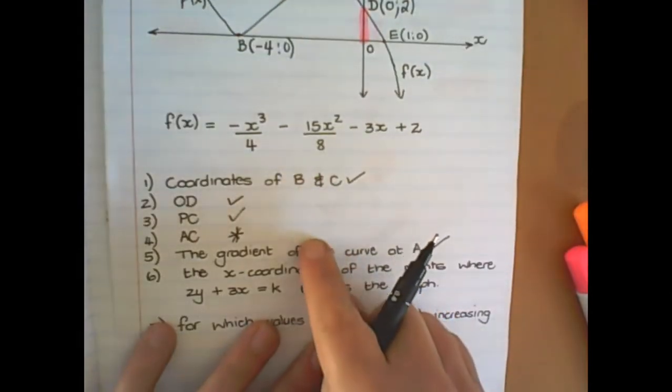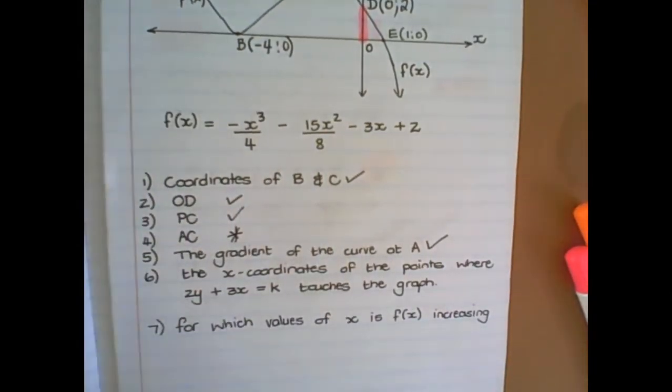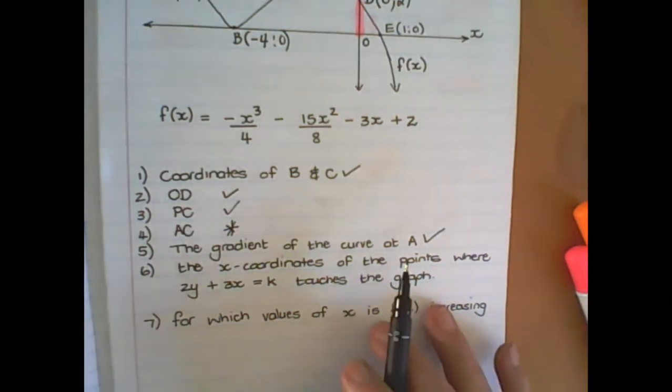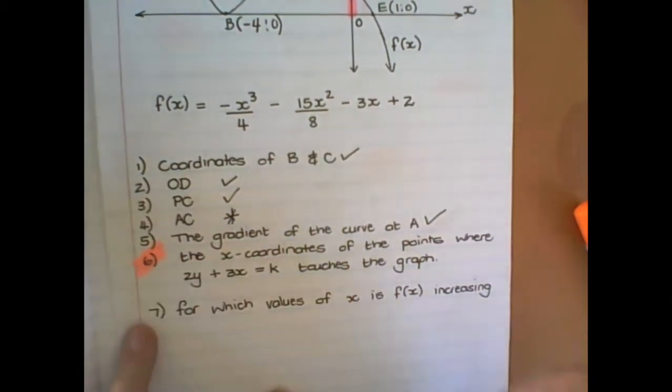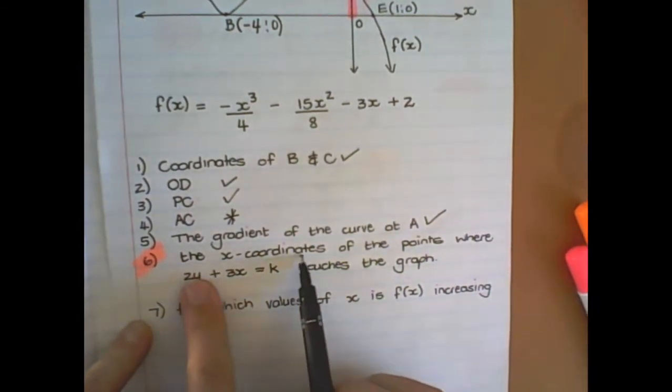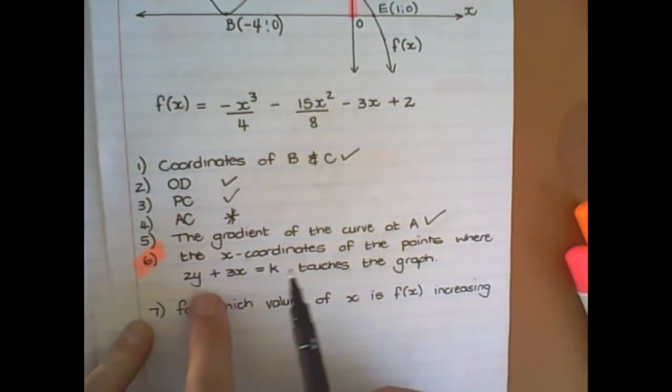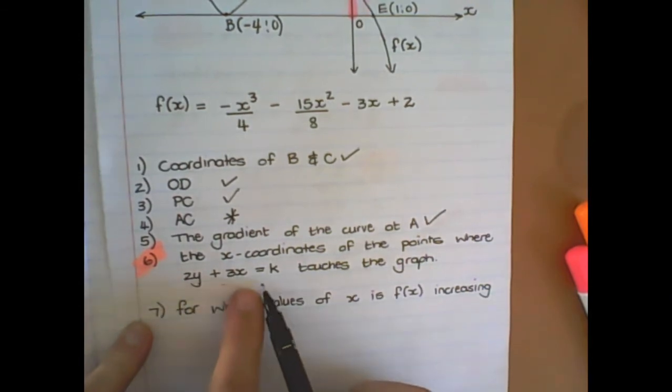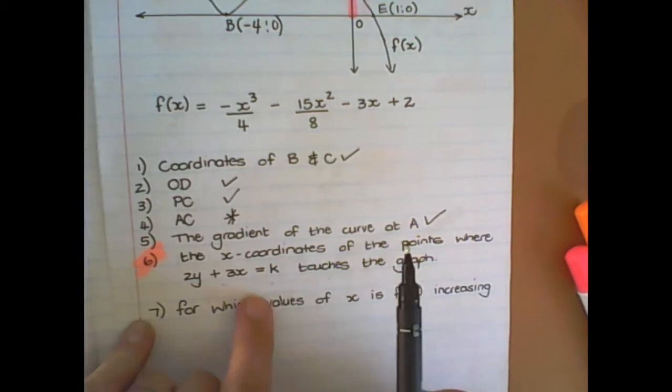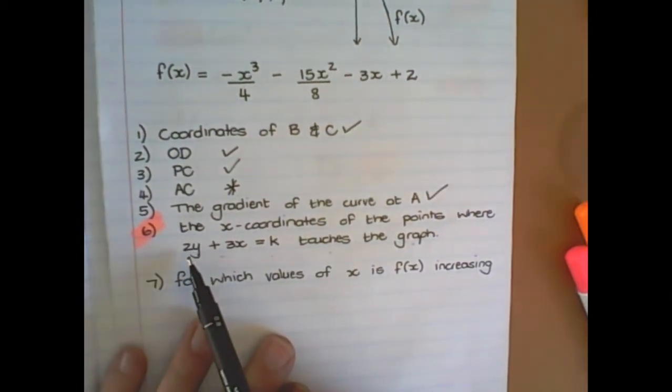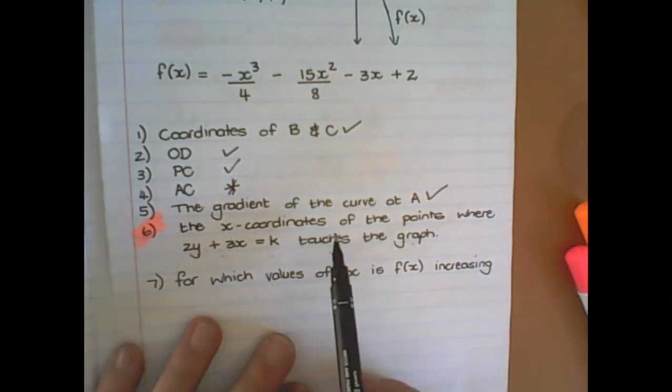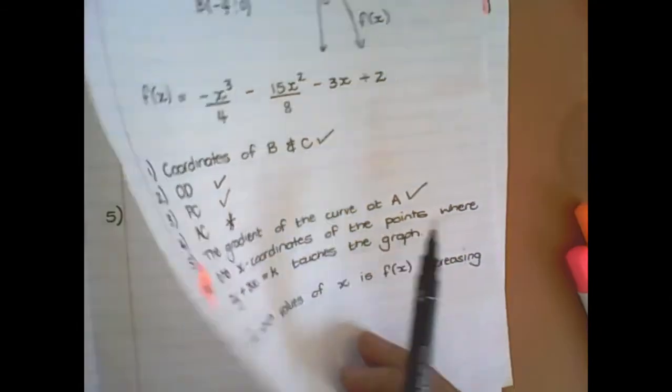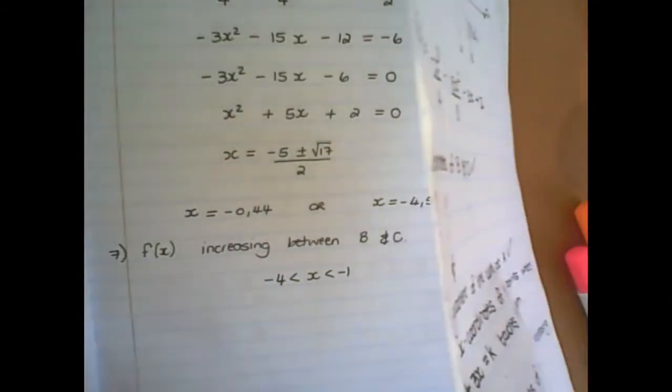All of the questions from 1 to 5, we kind of dealt with separately already in previous lessons. But now, this is a newer question, and this is the one where our focus needs to be, is find the x coordinates of the points where the line 2y, that's 3x equals to k, touches the graph. So they give us part of a straight line, and we want to find the coordinates of x, where the line touches the graph. Okay? And the solution is very simple. It's not that bad.